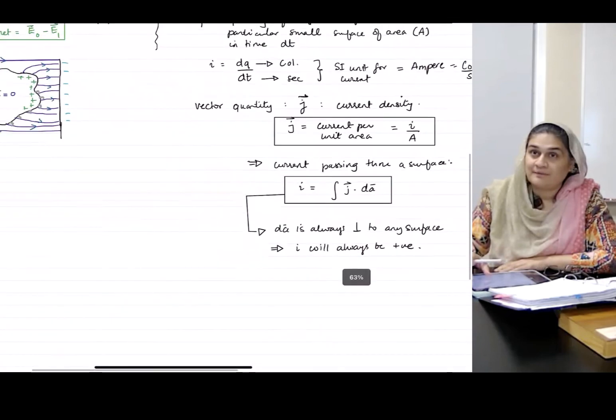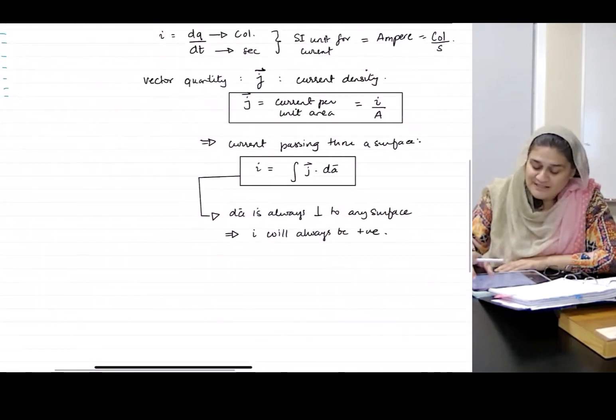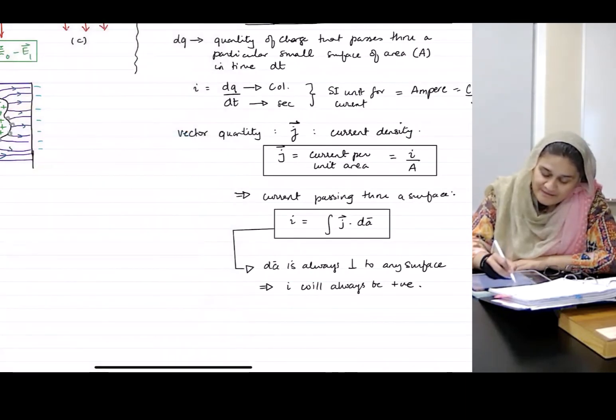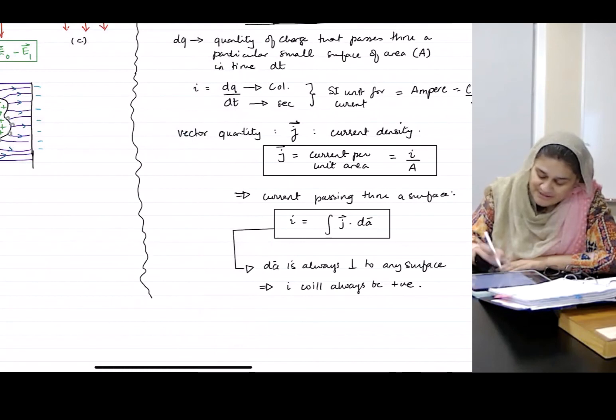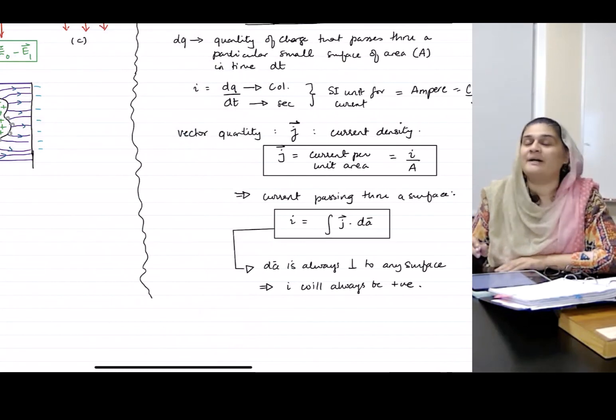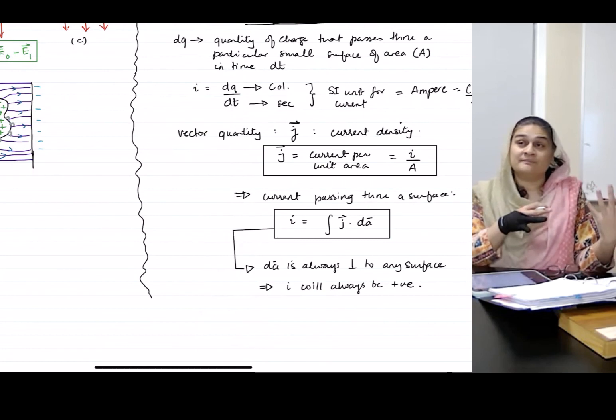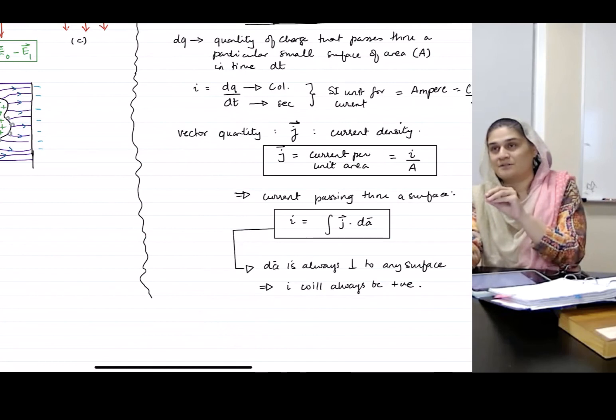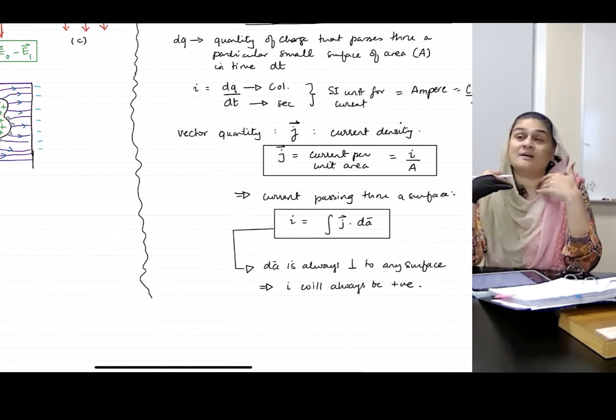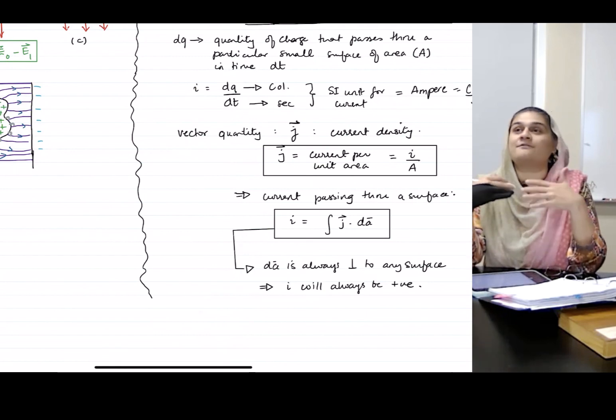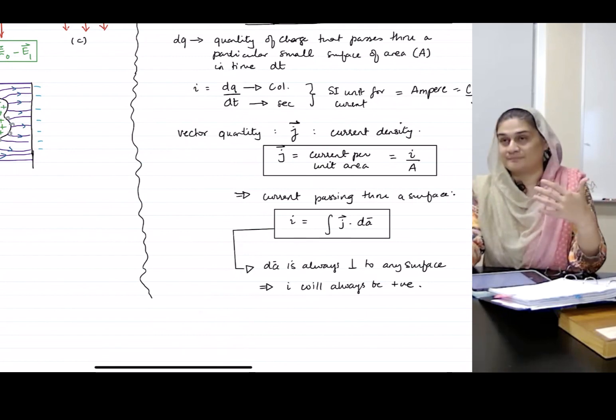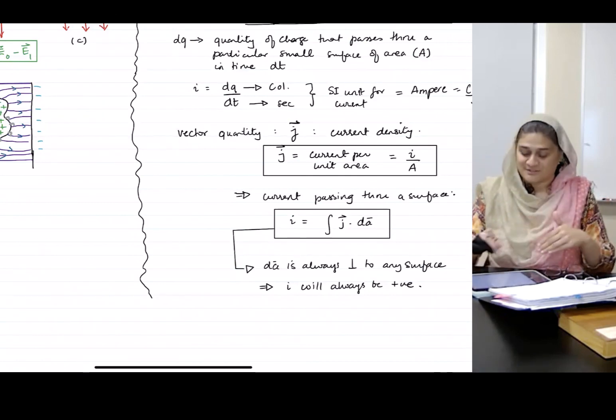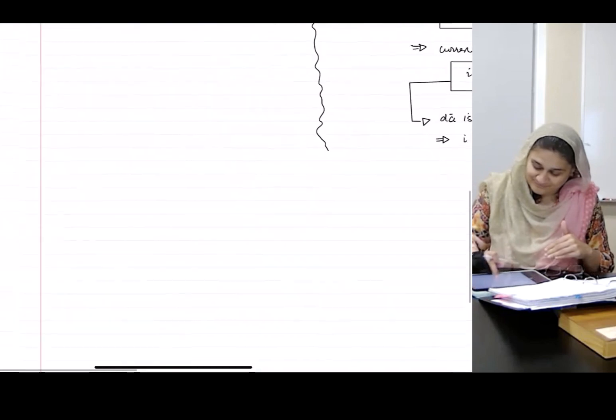Now, for the rest of the chapter, we are going to pretend that the static condition doesn't exist anymore. We talked about the static condition in chapter two. Now we're going to talk about the dynamic condition moving forward. We're going to talk about the different factors that affect current when it flows, and we're going to come slowly back towards where Griffiths starts.